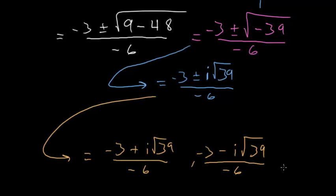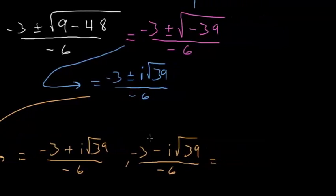And you can simplify this a little bit further. So we have in the left one, -3 divided by -6 is just 1/2. And then we have i√39 divided by -6, so that's -i√39 over 6.